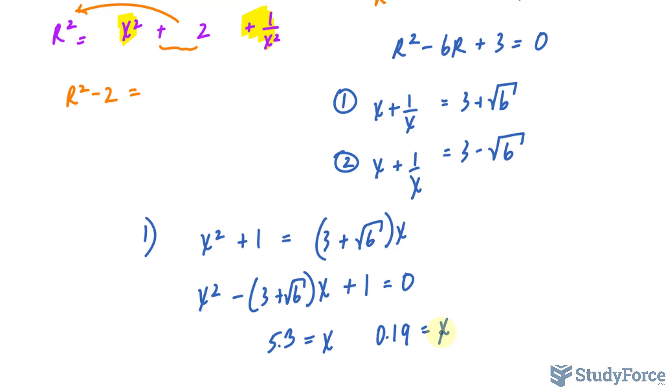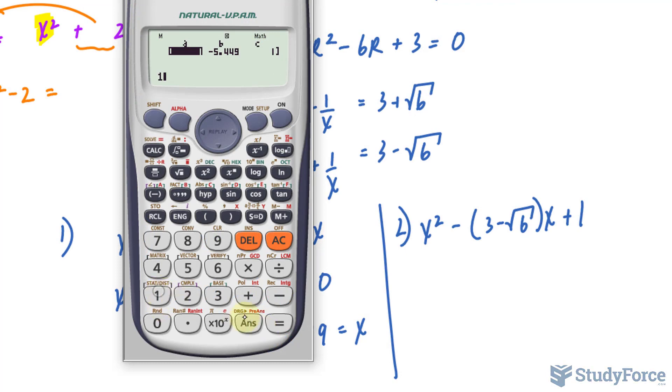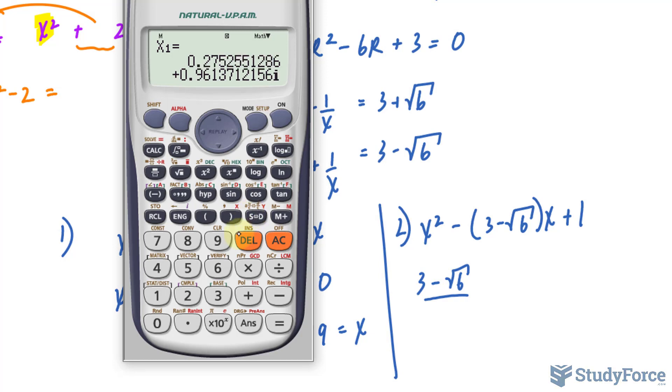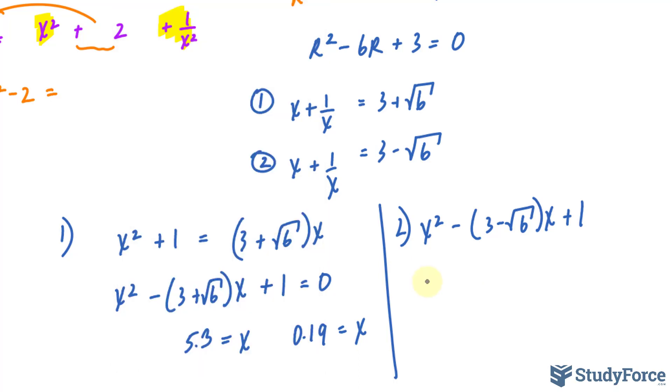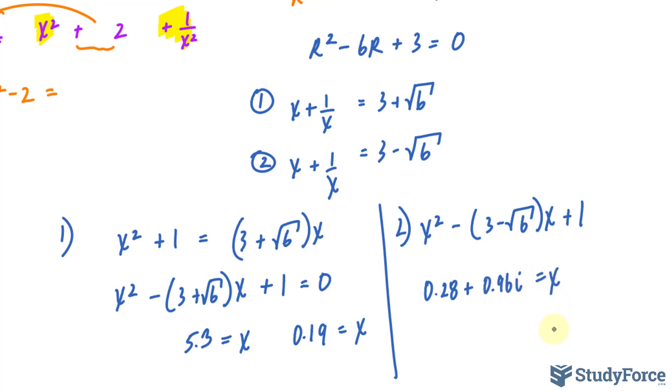A quartic can have up to four roots, so we need to apply the same method for the second equation. For r = 3 - √6, we have x² - (3 - √6)x + 1 = 0. Using the calculator with a=1, b=-(3 - √6), and c=1 gives us two more roots. Unlike the first two, these roots are imaginary: x ≈ 0.28 + 0.96i and x ≈ 0.28 - 0.96i.